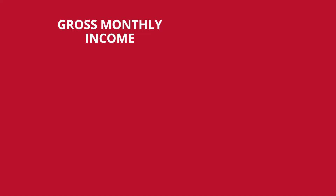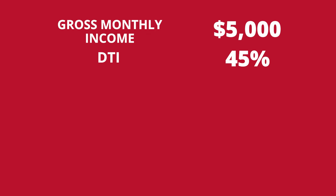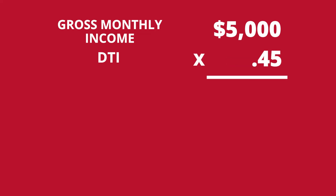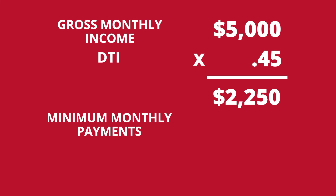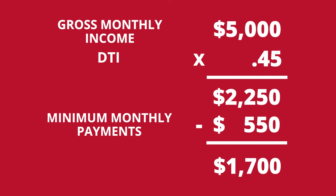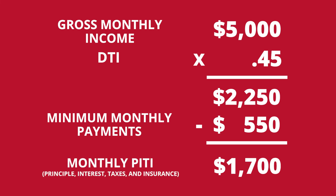In our example, you have a gross monthly income of $5,000 a month. If your goal is a DTI of 45%, you would take $5,000 and multiply by 0.45, which gives you $2,250 a month, then subtract your required minimum monthly payments of $550, which gives you $1,700. That means your monthly principal, interest, taxes, and insurance can max out at $1,700 a month.